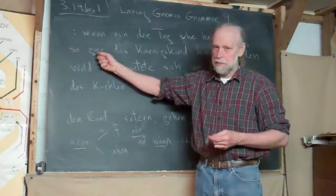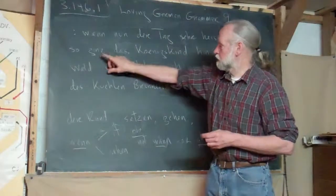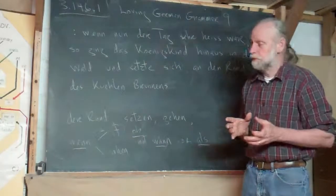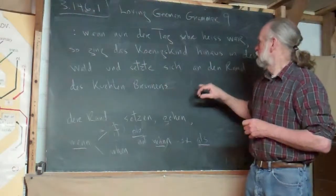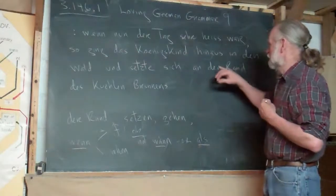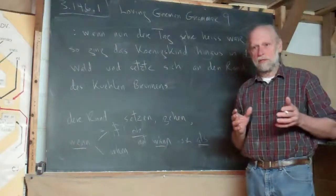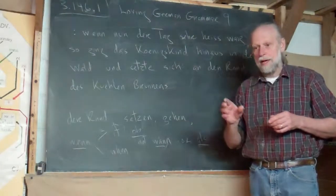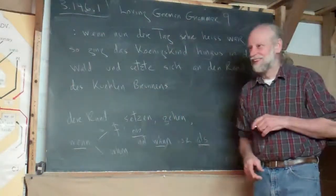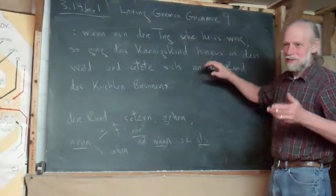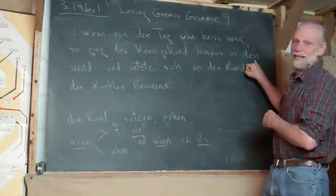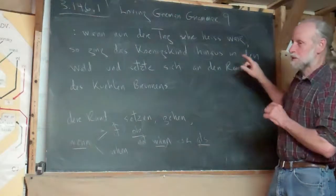So went — and see, the verb's got to be in that second position, because we've been told 'when,' so now the verb has to come before the subject: 'so went the king's child.' Now, it was a little girl, but 'child' is neuter — 'das Kind,' 'Königskind.' 'Hinaus' — that's a lot like the older English 'thither' or 'hence.' It's not just 'there'; it's motion toward. That's still there in German; it's gone from English. Into 'den Wald' — this is 'den,' accusative case, because there's motion toward it.